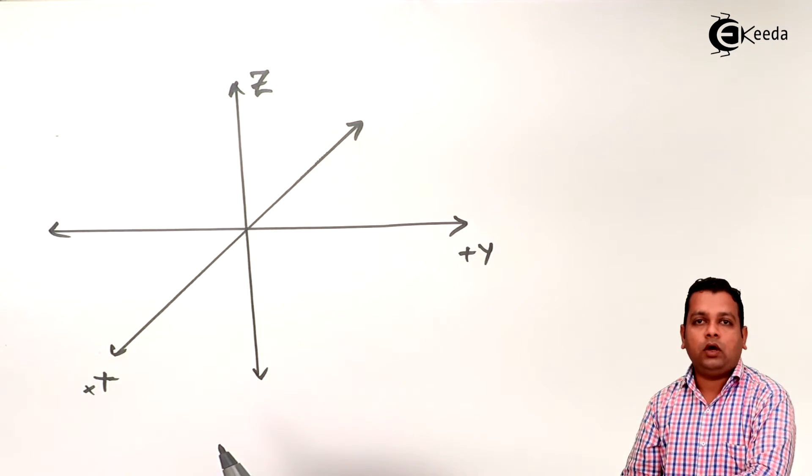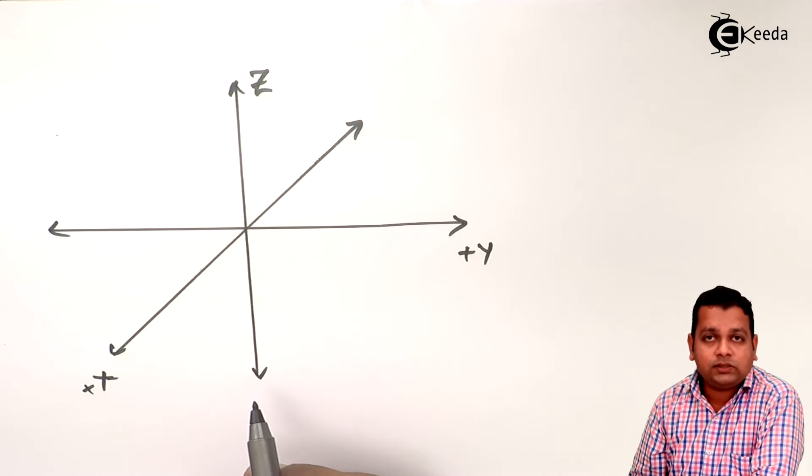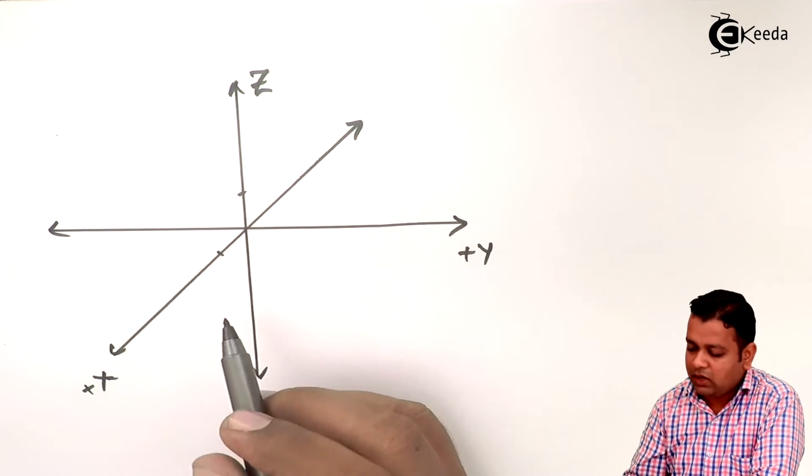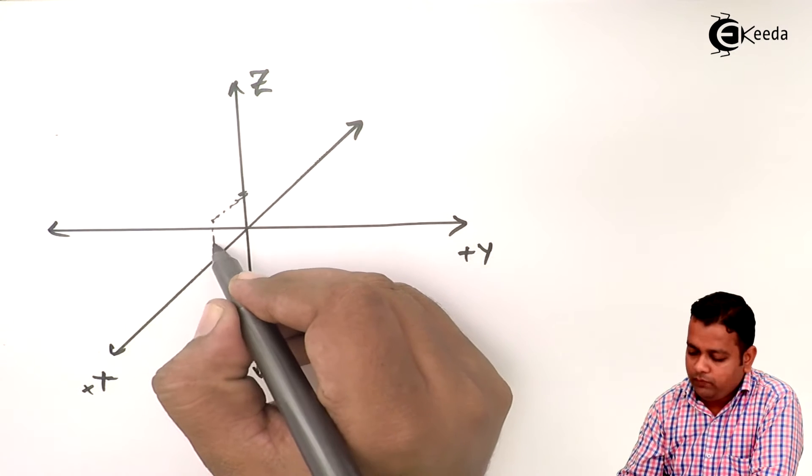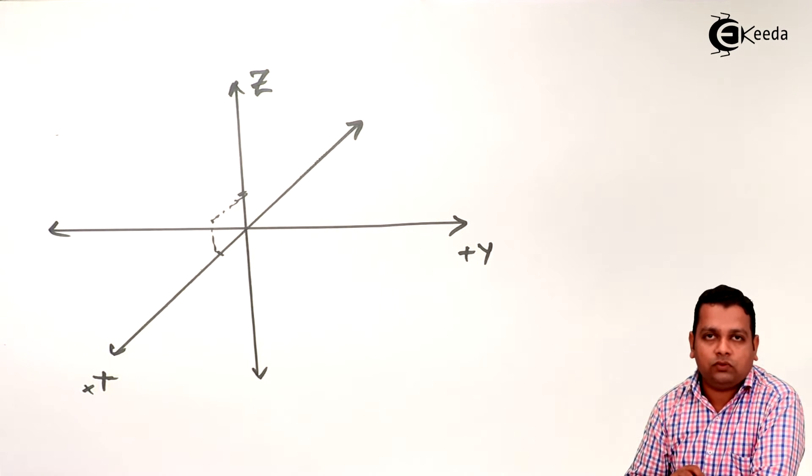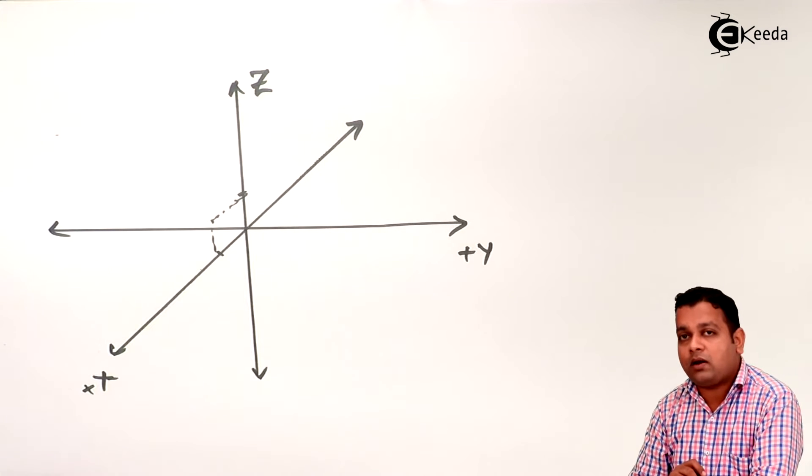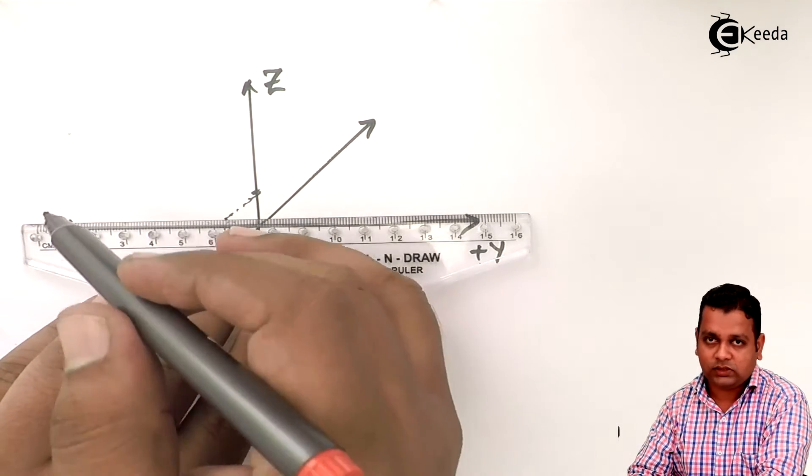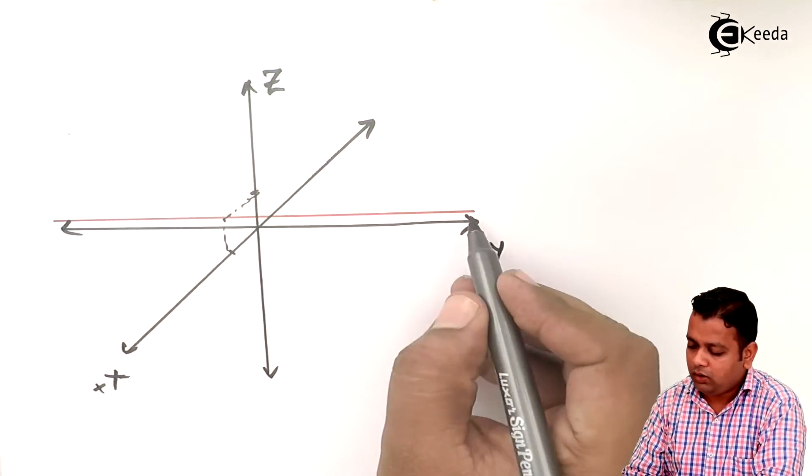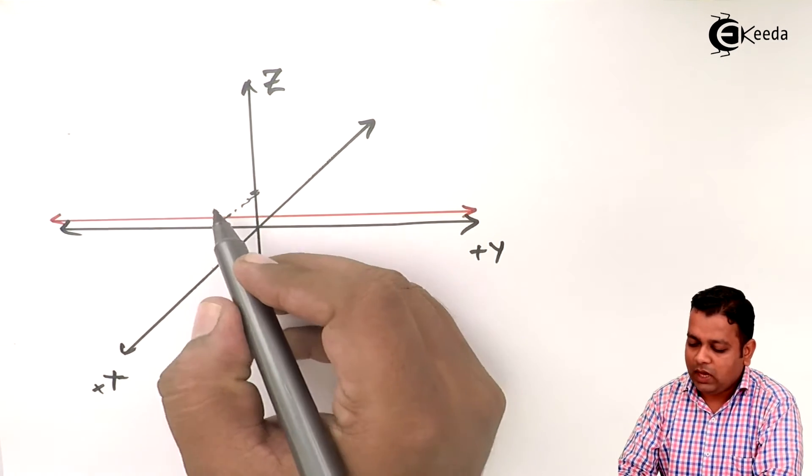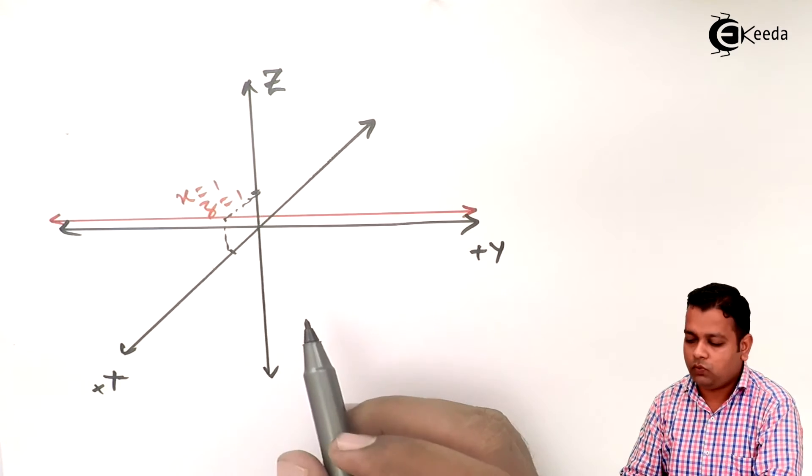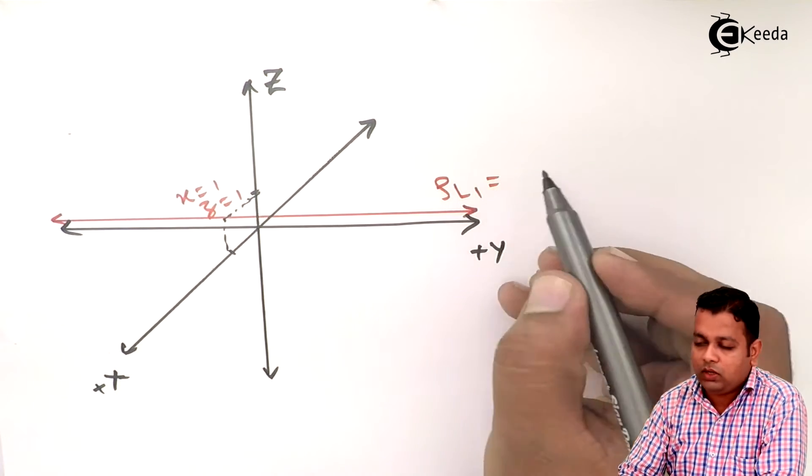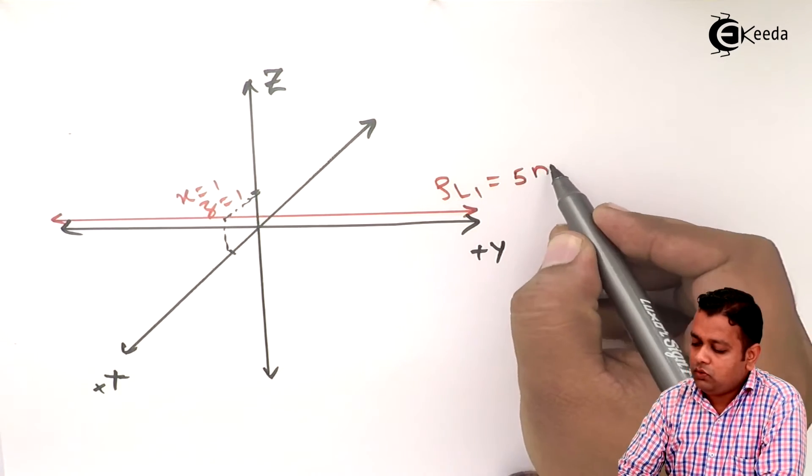Here it is the origin. Now the first line charge is defined by the location x equals 1 and z equals 1. So I mark one unit onto the x axis, one unit onto the z axis. The intersection will be a point. Now y is not fixed to any value, so it means this is a line charge which is parallel to y axis. So I show you the first line charge.